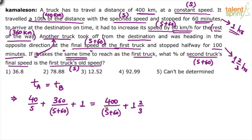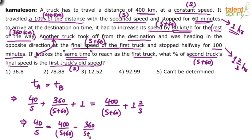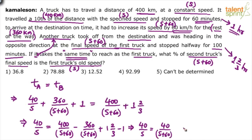Rearranging the equation: bring 360/(S+60) and 1 to the other side, giving 40/S equals 400/(S+60) minus 360/(S+60) plus 1 and 2/3 minus 1. This simplifies to 40/S equals 40/(S+60) plus 2/3, since 400/(S+60) minus 360/(S+60) is 40/(S+60), and 1 and 2/3 minus 1 is 2/3. We need to solve this equation for S.